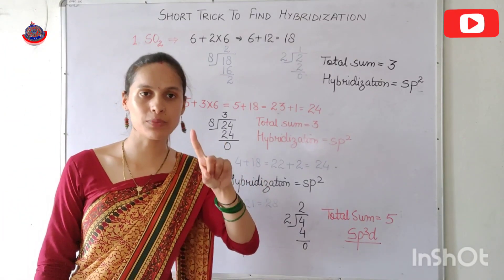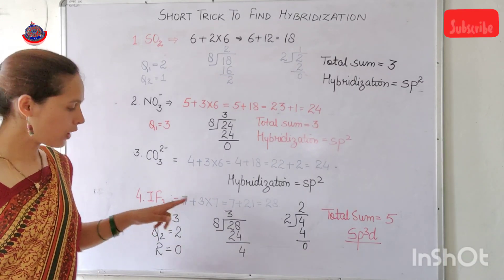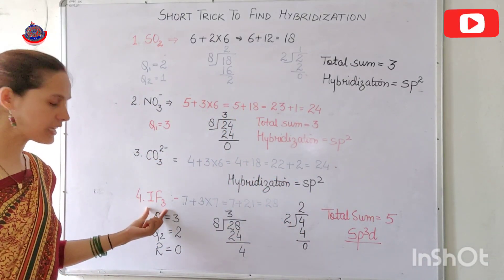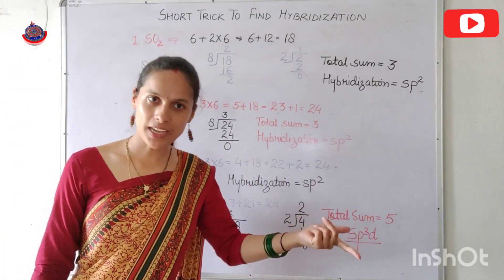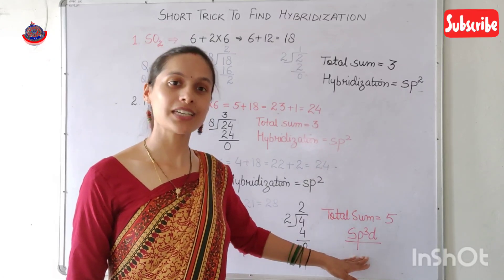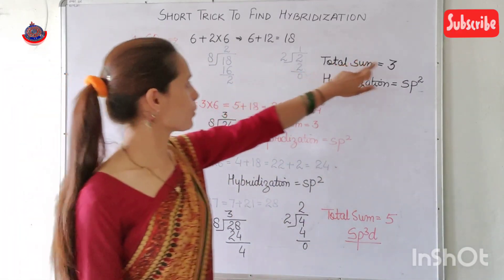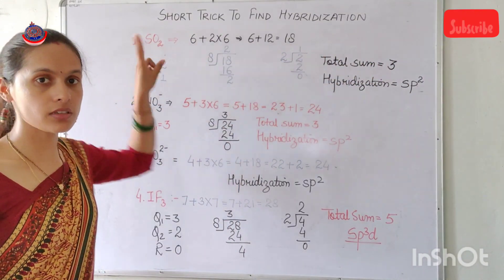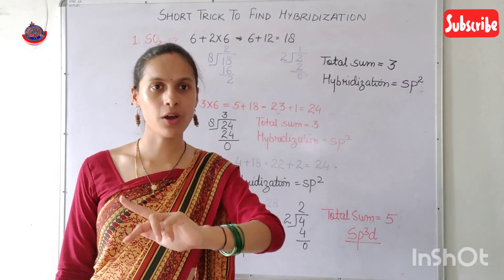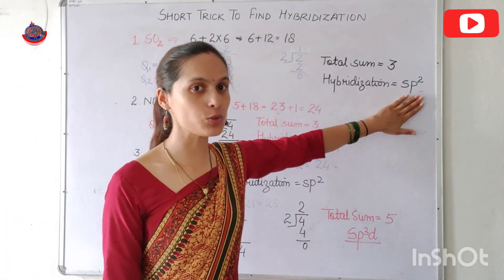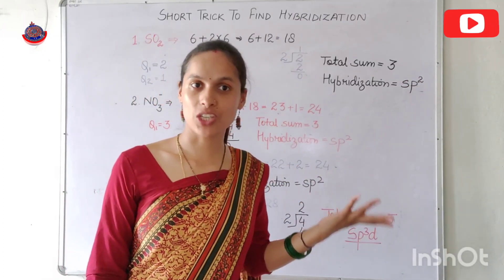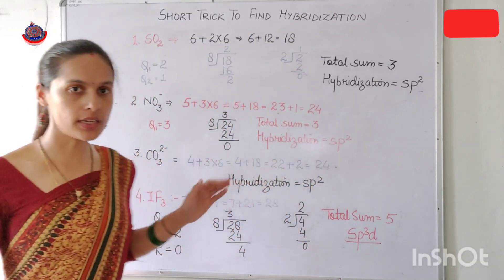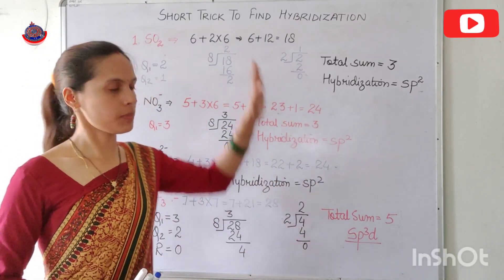For IF₃, hybridization is sp³d so we have 5 electron pairs total. Iodine has 3 fluorine atoms bonded, and since halogen forms only one bond, there are 3 bond pairs and 2 lone pairs. With 3 bond pairs and 2 lone pairs in a trigonal bipyramidal arrangement, the shape is T-shaped.